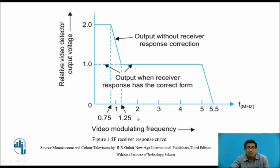If you observe, the voltage from 0 to 0.75 MHz is double compared to the voltage across 1.25 MHz to 5 MHz.